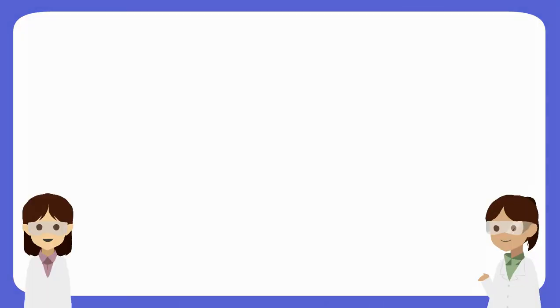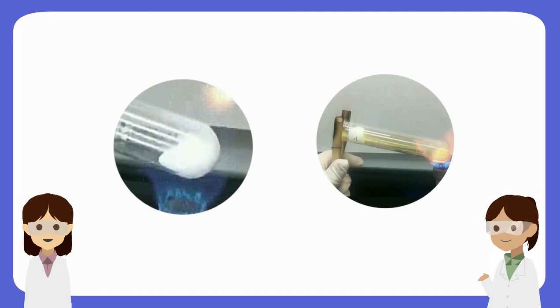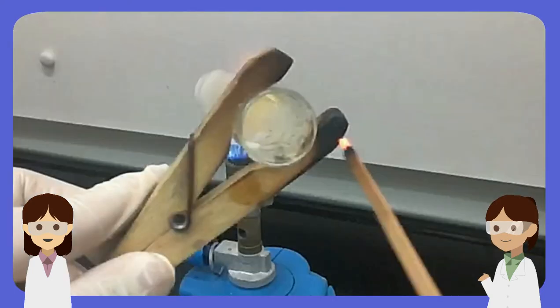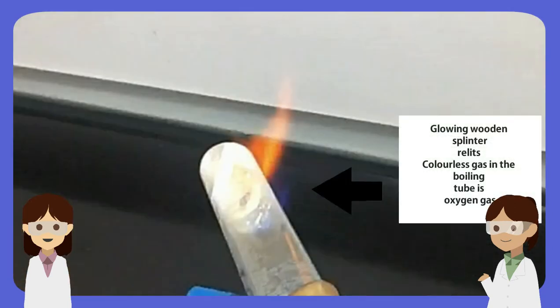Generally, the decomposition of Group 2 nitrates produces white solid and brown gas. To determine whether colorless gas is present, a glowing wooden splinter is placed into the mouth of the boiling tubes.